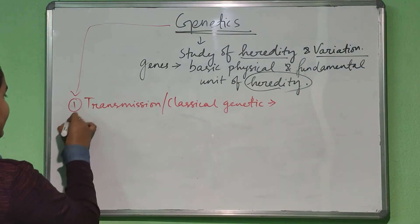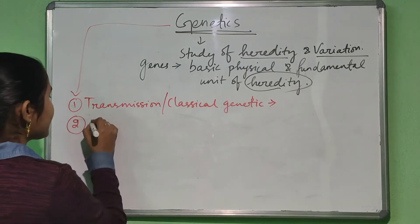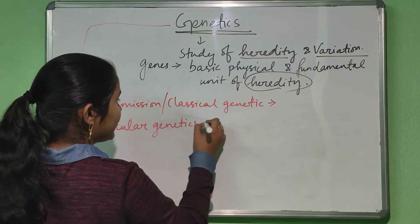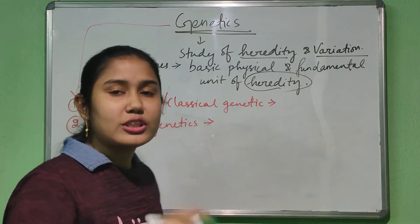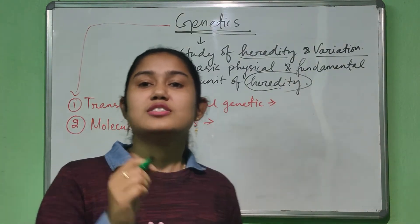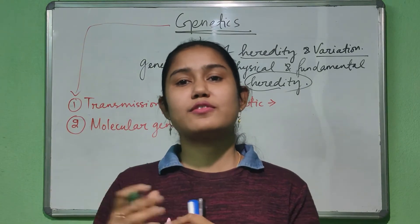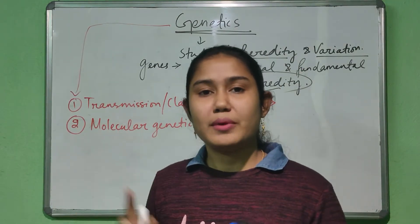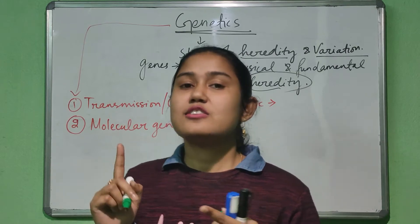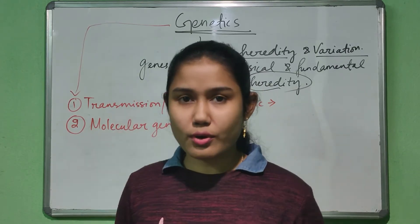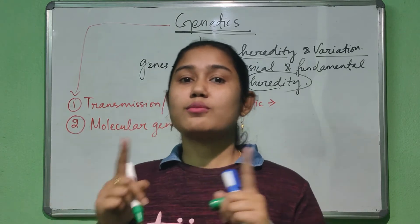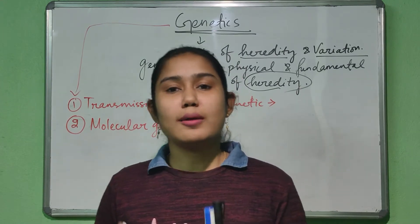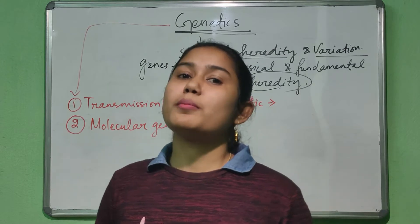The second area of genetics is molecular genetics. In molecular genetics, we will study about the behavior and structure of genes. In this area, we will study about the replication process, transcription process, and translation process — how DNAs are formed, how RNAs are formed from DNAs, how proteins are formed from mRNA. We will also study the operon concept and recombinant DNA technology.